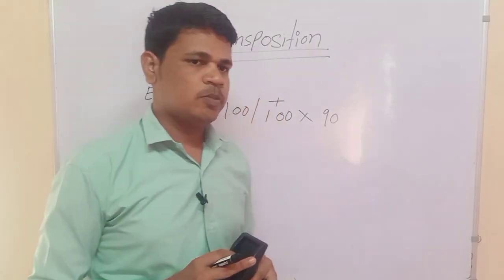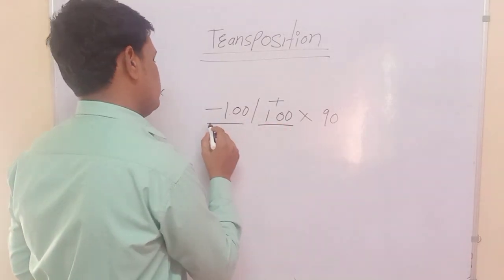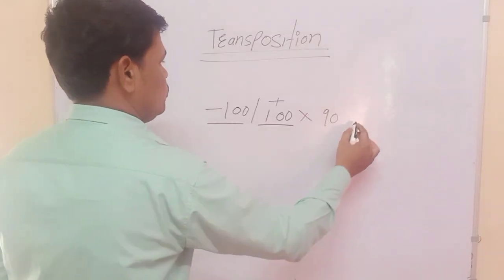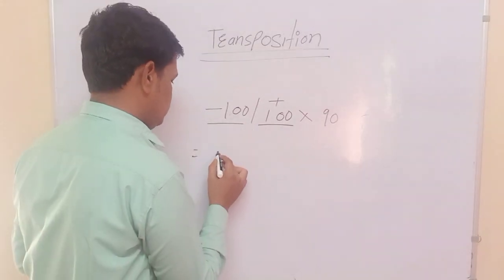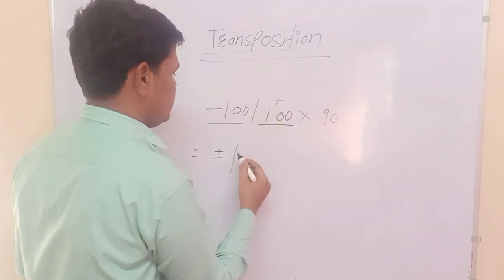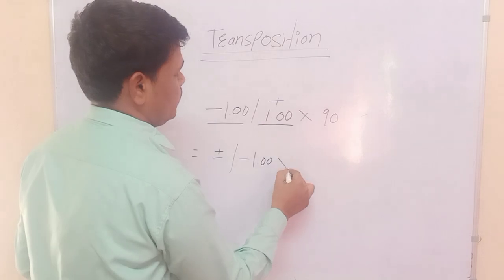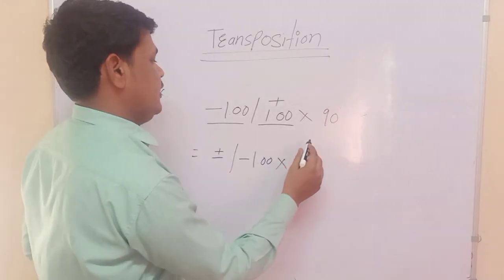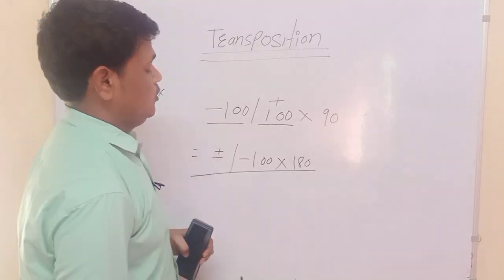Now the second example: -1 diopter sphere, +1 diopter cylindrical at 90 degrees. Rule one — add sphere plus cylindrical: -1 plus +1 equals 0. Rule two — change the sign of cylindrical: plus becomes minus, value stays the same: -1 diopter. The axis is 90 degrees, so we add 90 to get 180 degrees. Final transposition: 0 sphere, -1 diopter cylindrical at 180 degrees.